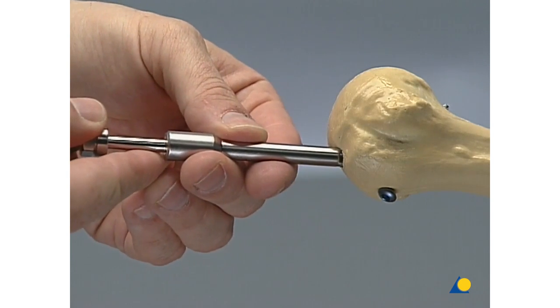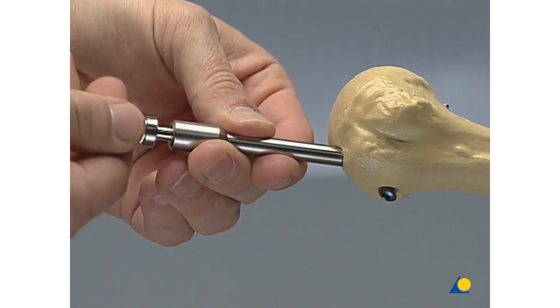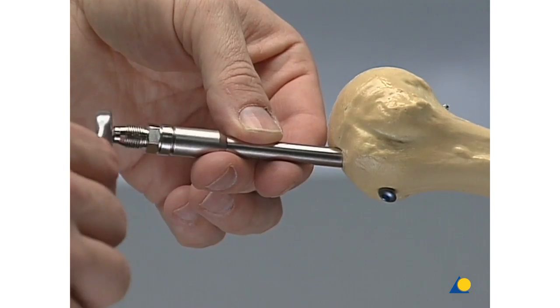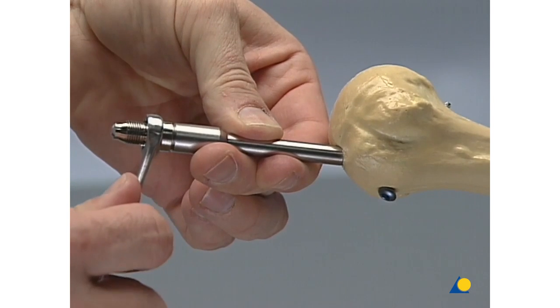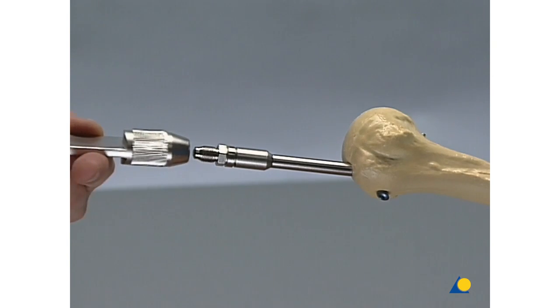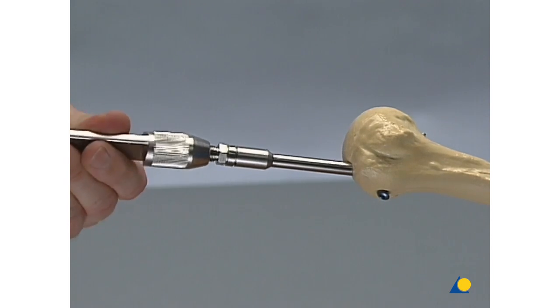Now, we screw the connecting screw and the coupling block into the proximal end of the UHN and tighten with the combination wrench. Finally, the inserter extractor is screwed onto the end of the connecting screw.